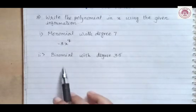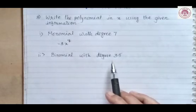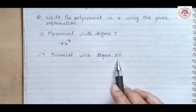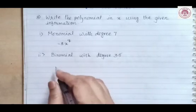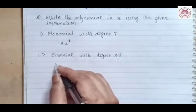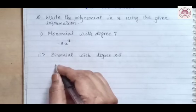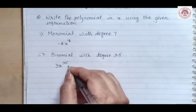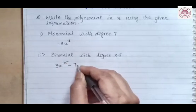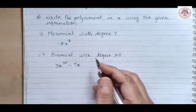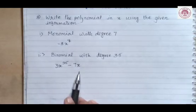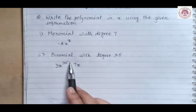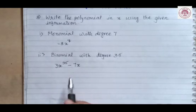The second question is a binomial with degree 35. Binomial means a polynomial with two terms and the highest index should be 35. The polynomial or binomial can be 3x raised to power 35 minus 7x. This is a binomial with degree 35, where the highest power or index is 35.